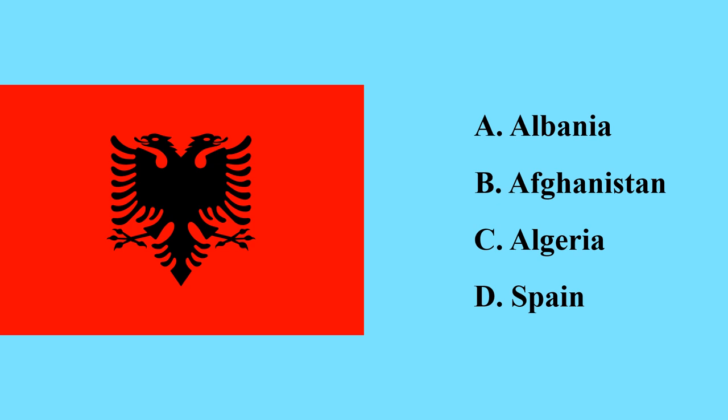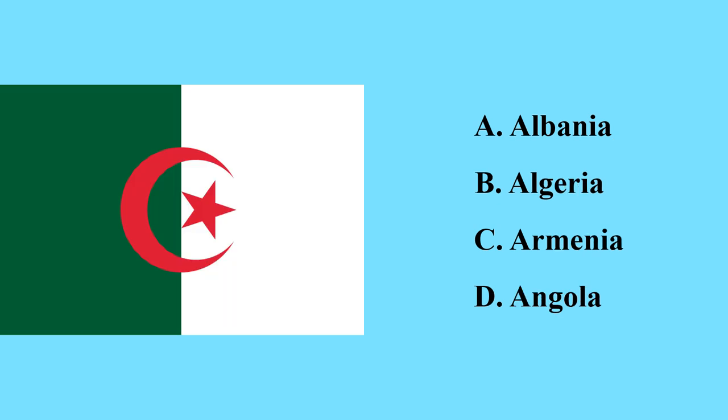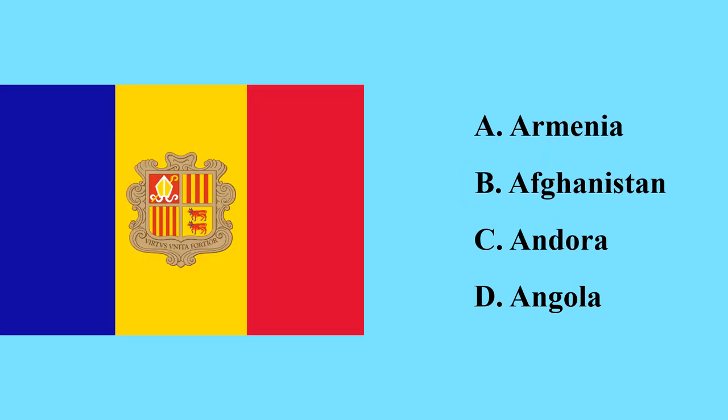This flag belongs to which country? It is the Albanian flag. Albania is a country in Europe. This is a flag of Algeria — Algeria is the largest country in Africa, located in northern Africa. This is a flag of Andorra — Andorra is a smaller country in southern Europe.